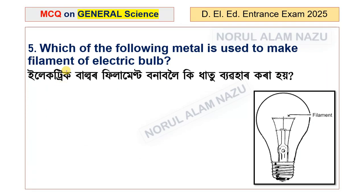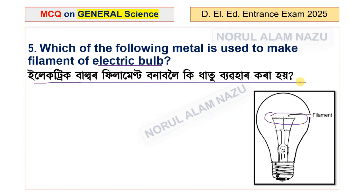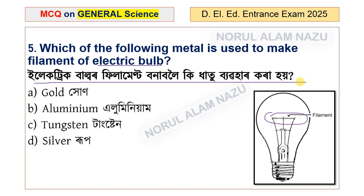Question number 5: Which of the following metal is used to make the filament of an electric bulb? The options are gold, aluminium, tungsten, and silver. The answer is option C: tungsten.